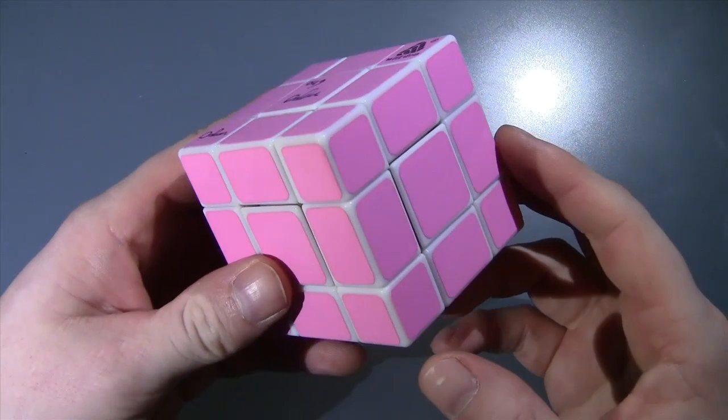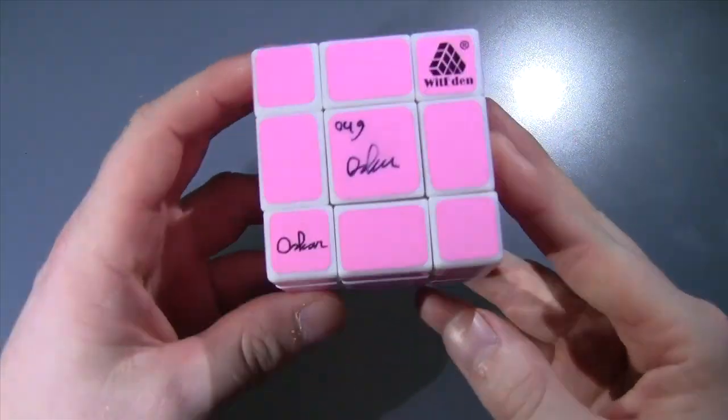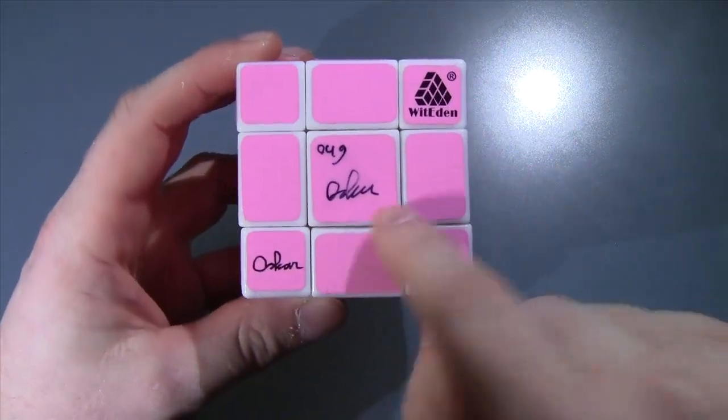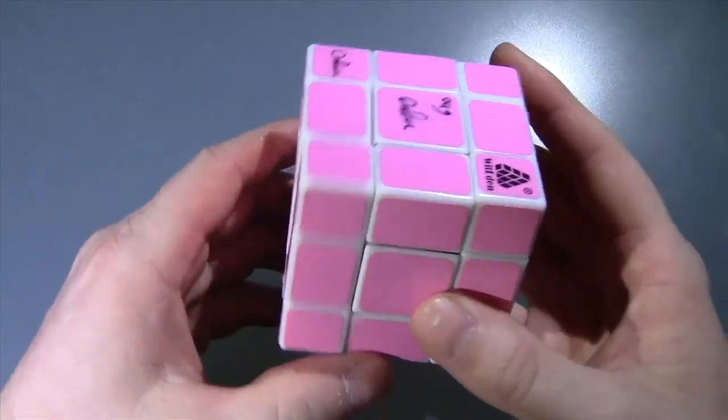Hello everybody, in today's video I'm going to show you this mix-up cube that I got from Whit Eden. It's actually signed by Oscar Van Deventer himself. If you're new to cubing,